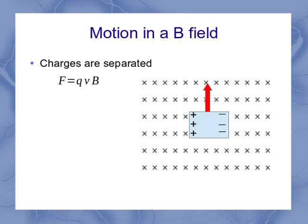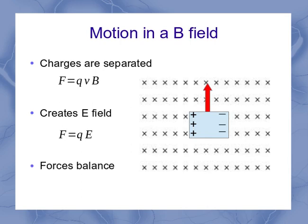Well, it's a force of QVB causing the charges to separate. But as soon as the charges start to separate, it creates an electric field. And so there's a force trying to pull them back together, which is equal to Q times E. The charges are going to keep separating until those forces balance out. In other words, till QE equals QVB.